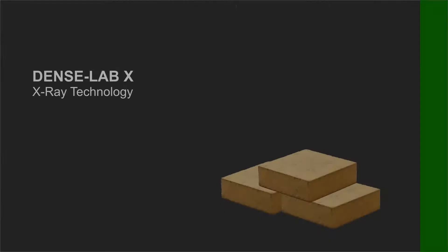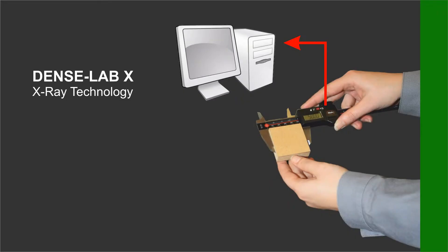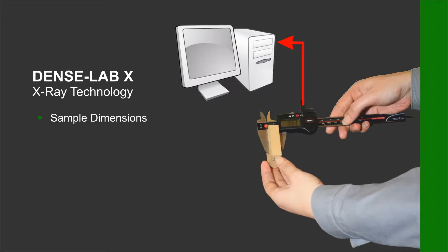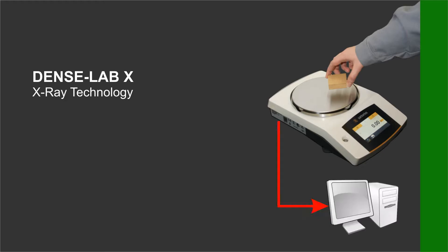Board samples with dimensions of 50 by 50 millimeters or 2 by 2 inches are used for testing. The exact measurements will be taken with the caliper and transferred directly to the analyzer. The exact weight of the samples will be taken by a precision scale and also transferred to the analyzer.